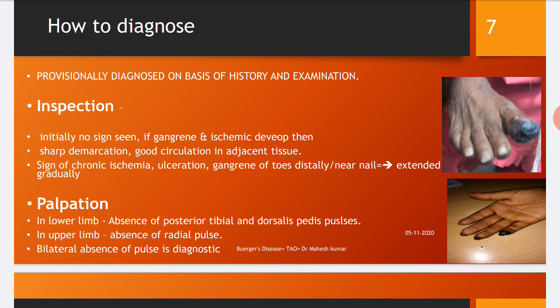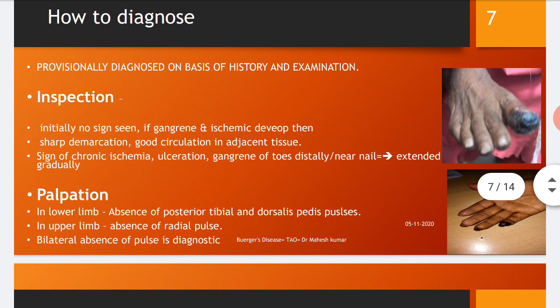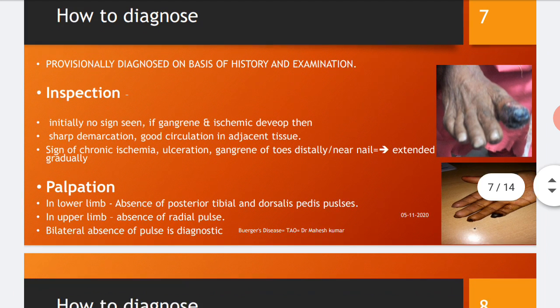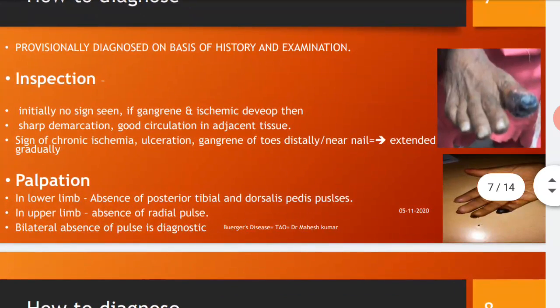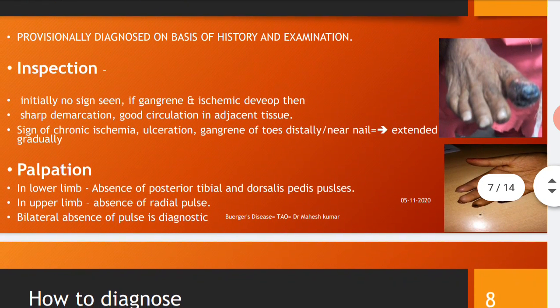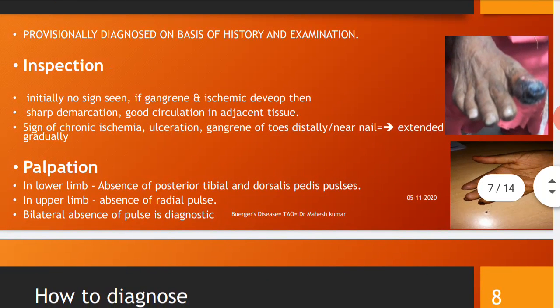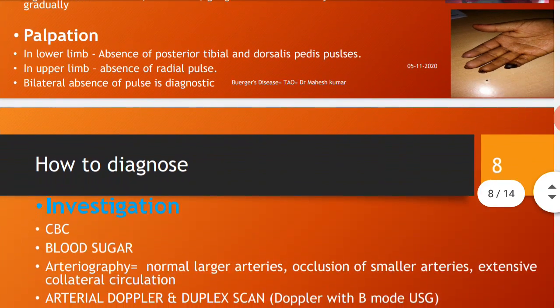On palpation: in the lower limb, absence of posterior tibial and dorsal pedis pulses is noted. In the upper limb, absence of radial pulses is observed. Bilateral absence of pulses is diagnostic for Buerger's disease.